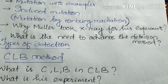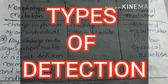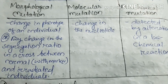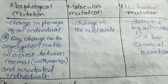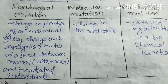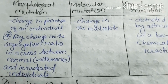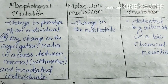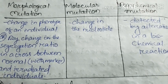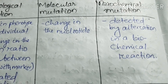The types of detection of mutation are: first, morphological mutation; second, molecular mutation; and third, biochemical mutation. Morphological mutation involves changes in the phenotype of an individual — like changes in eye color or body part shape. Molecular mutation is when changes are found at the nucleotide level. Biochemical mutation is detected by the alteration in a biochemical reaction.